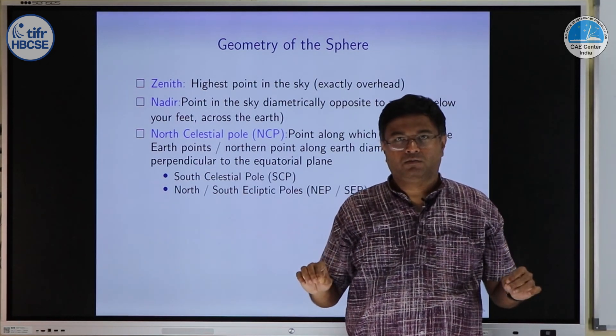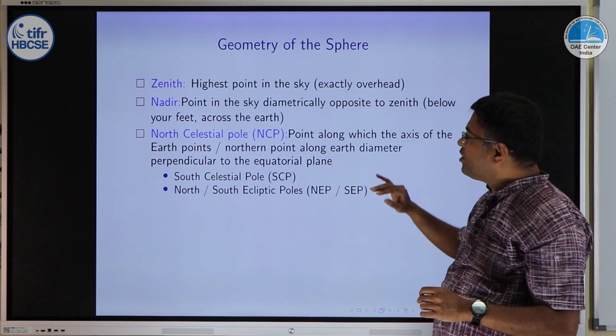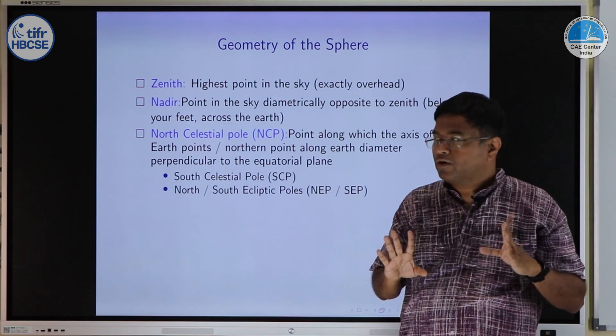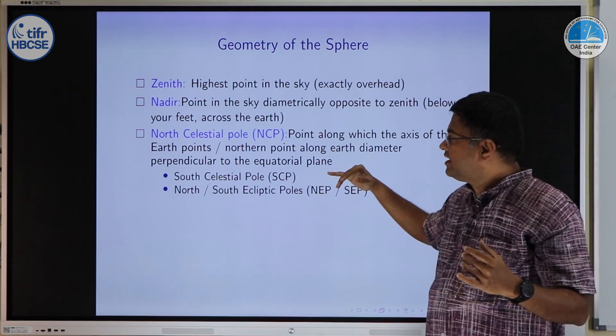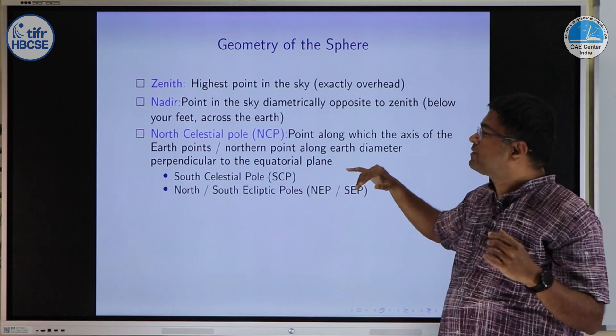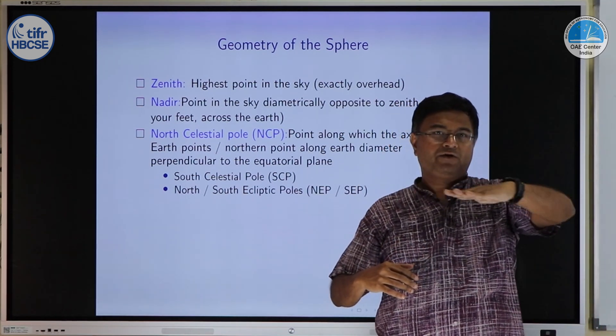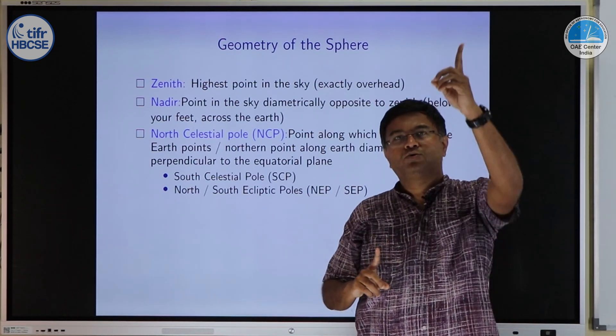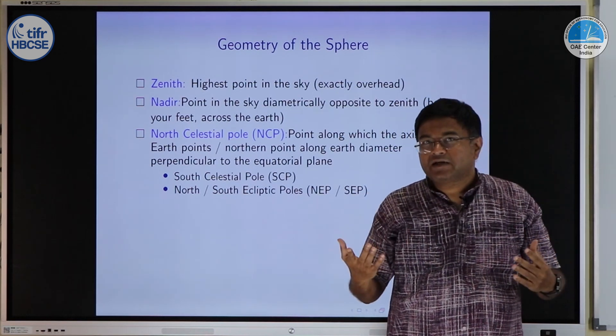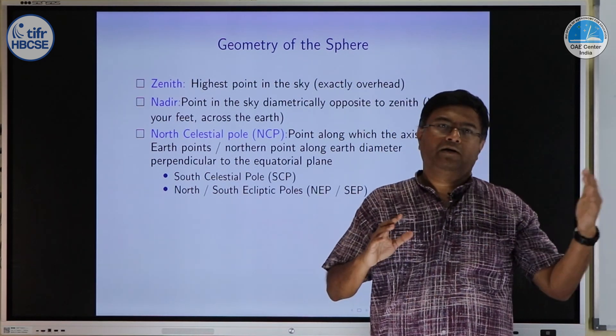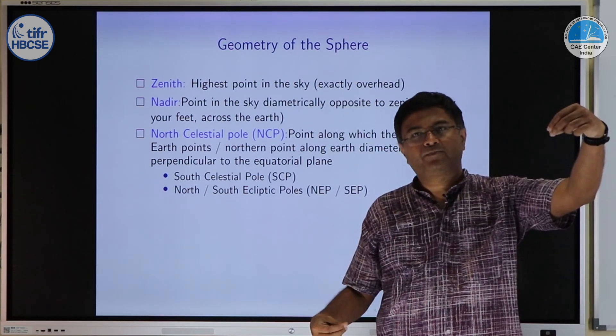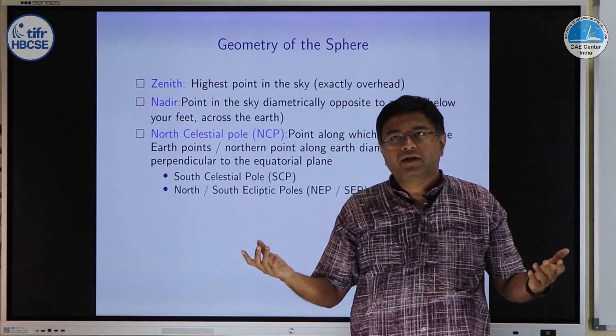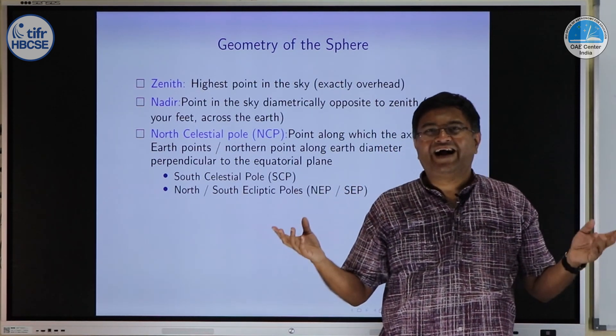North celestial pole NCP is the point along which the rotational axis of earth points. You can say northern point along earth diameter which is perpendicular to the equatorial plane. So if you take the plane of equator, draw a diameter which is perpendicular to that plane, then the northern end of that point will point to north celestial pole. Like we have north celestial pole, there will be south celestial pole. And like in case of equator we define north and south celestial poles. If you take ecliptic which is inclined to equator, similarly we can define north ecliptic pole and south ecliptic pole.